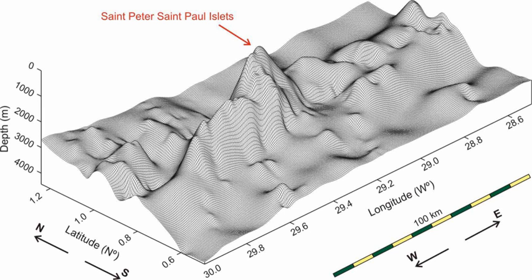The St. Peter–St. Paul complex lies in the equatorial Atlantic Ocean. It is 90 km long and 4,000 m high.